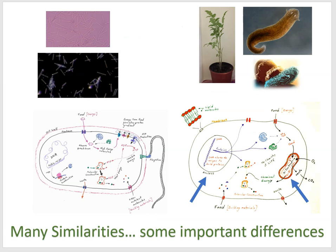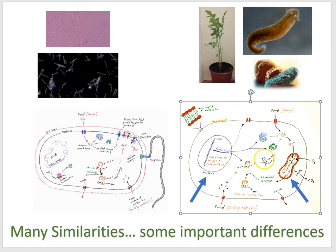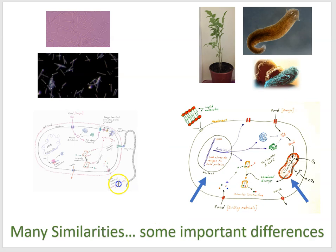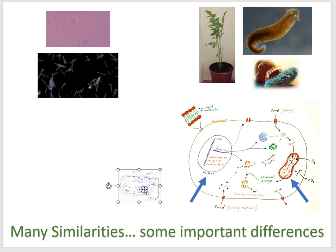Here we have two cartoon cells side by side: a bacterial cell and a more complex cell found in a plant, animal, paramecium, or amoeba. Many similar processes happen in all cells on Earth, but there are notable differences. Bacteria are much smaller — the simplest cells on Earth. The larger, more complex cells have a nuclear membrane around their DNA and structures like mitochondria, which we'll study later.